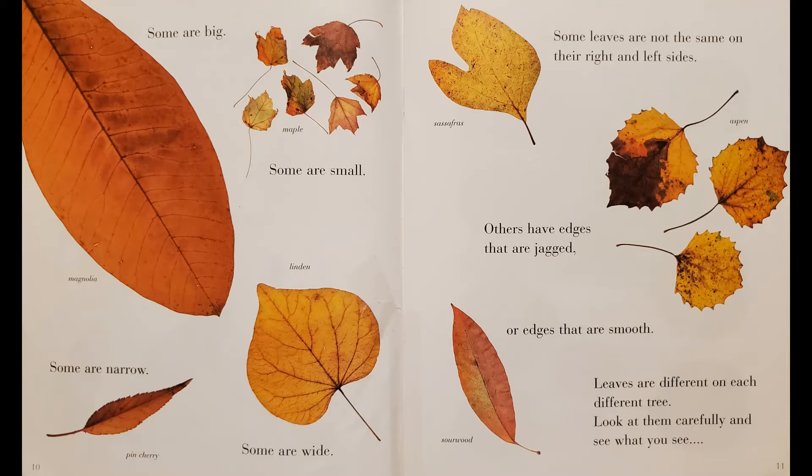Some are narrow, some are wide. Some leaves are not the same on their right and left sides. Others have edges that are jagged or edges that are smooth. Leaves are different on each different tree. Look at them carefully and see what you see.